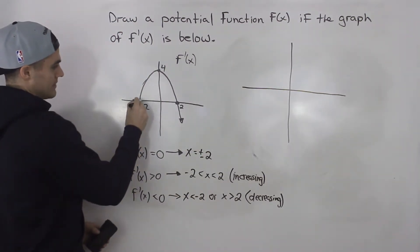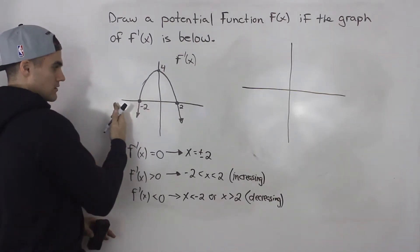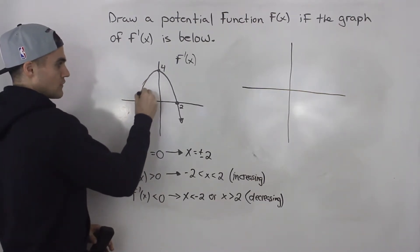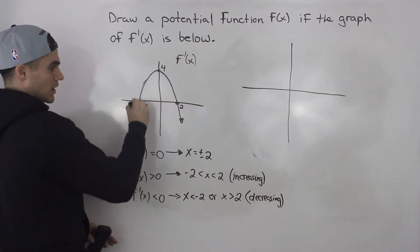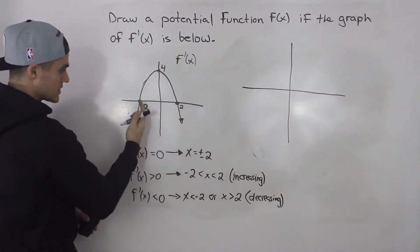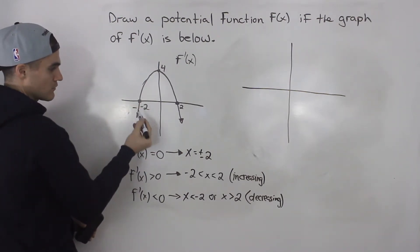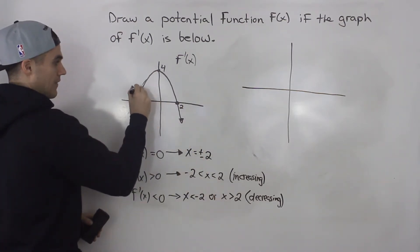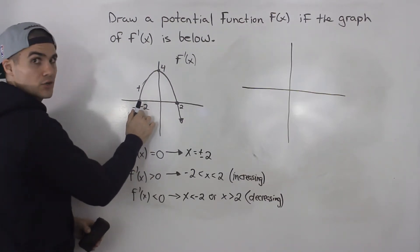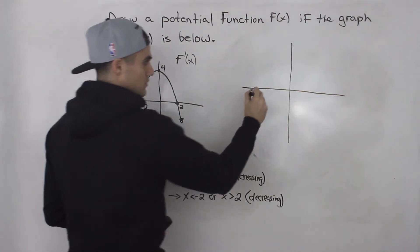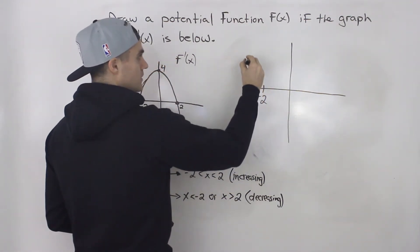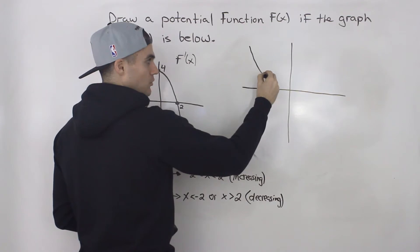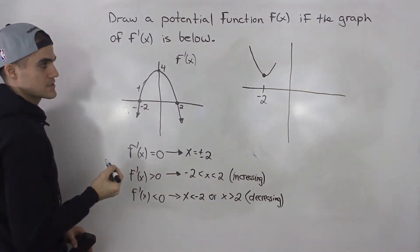Notice here at x equals negative two: just before it, the function is decreasing because the derivative is negative, and then right after, the function is increasing. To the left of negative two, the signs of the derivative are negative, meaning that f of x is decreasing. And then to the right of negative two, it's increasing. So we know that at negative two there's going to be a local minimum — the function decreases to that point and then increases after.